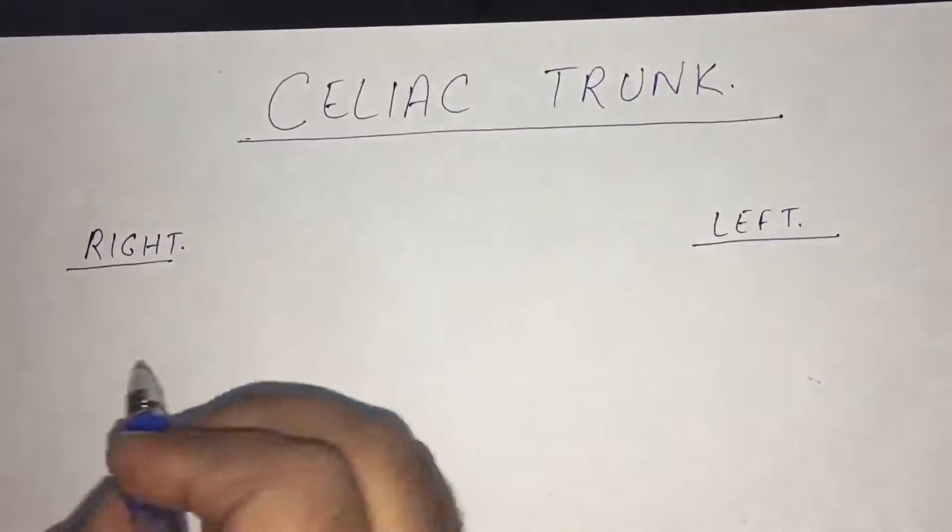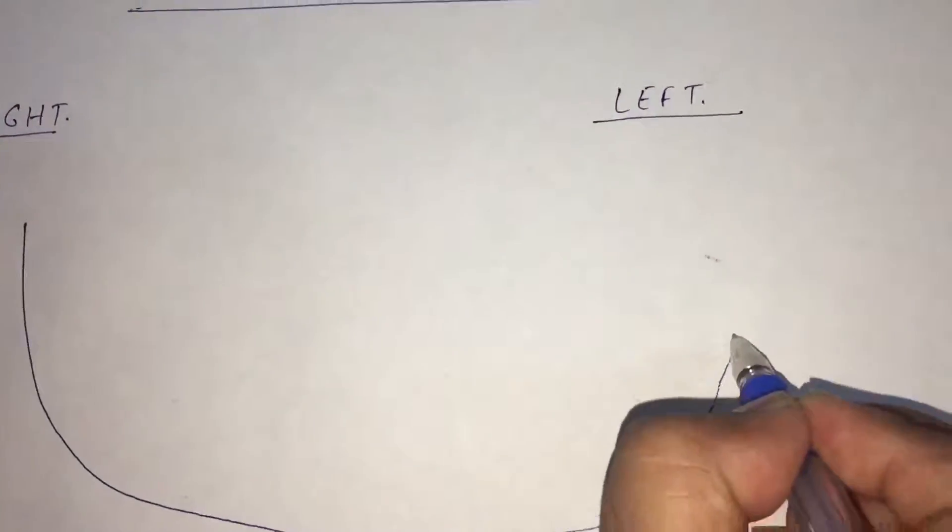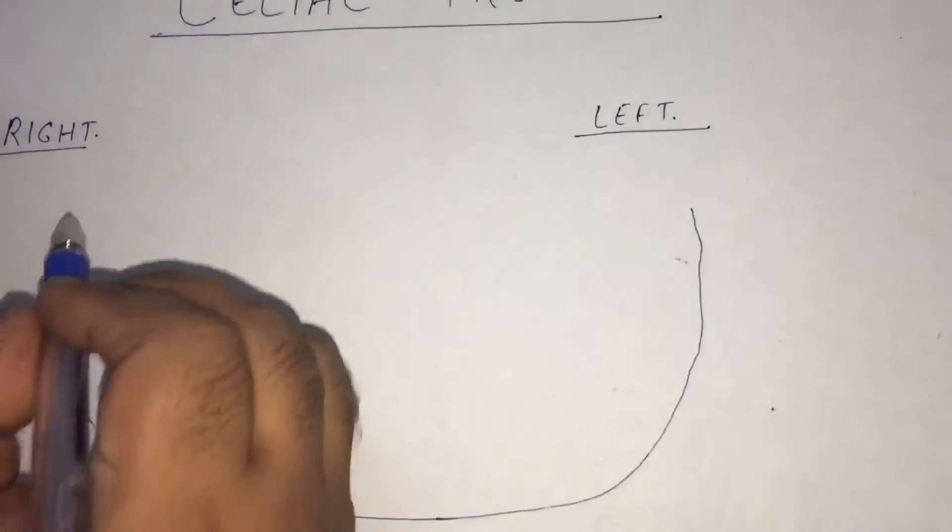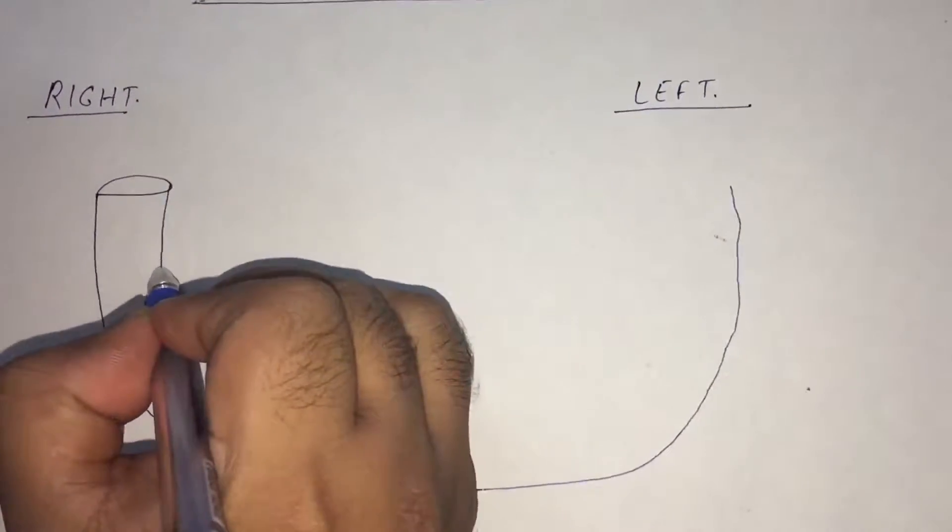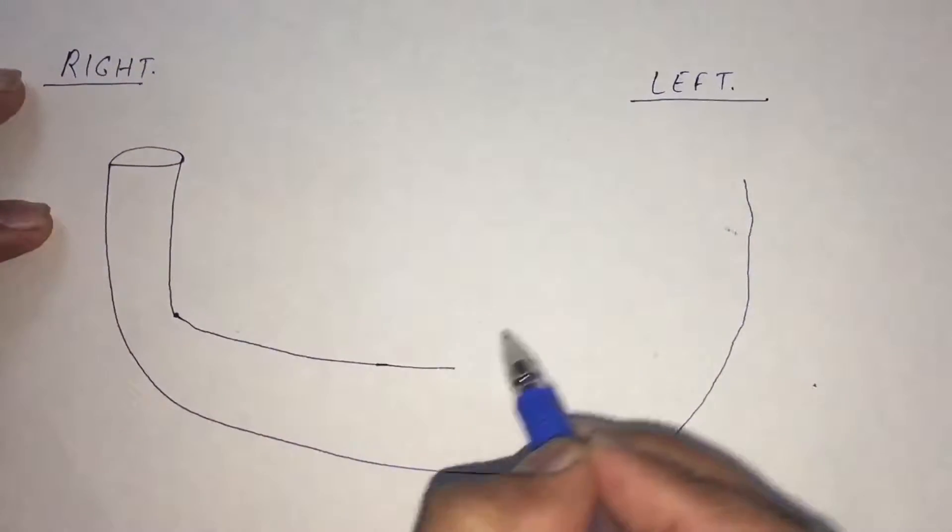First you have to draw a giant C. And now you have to draw the three main branches of the celiac trunk. One on the right and two towards left.